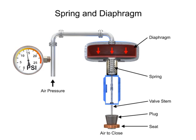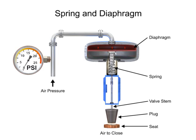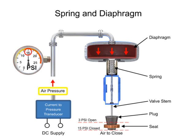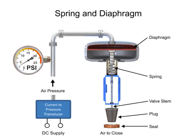With no air pressure, the restrictor is pushed upward by the spring to act as a normally open control valve. To vary the position of the restrictor and flow through the valve, a current to pressure transducer can be used to provide a 3 to 15 PSI signal to the diaphragm. At 3 PSI, the valve is maintained open, and at 15 PSI, the valve is maintained closed. Pressures between the 3 to 15 PSI range proportionally change the flow of the valve.